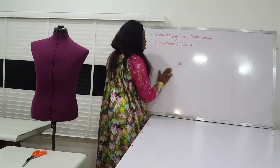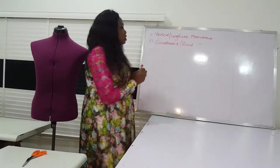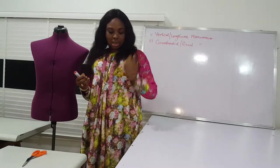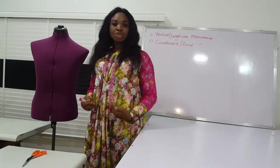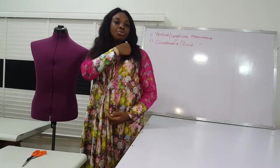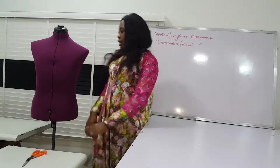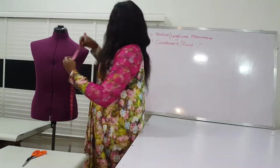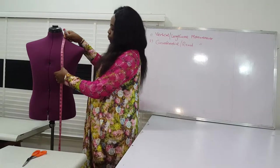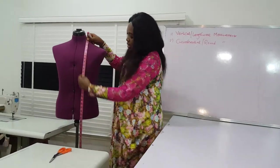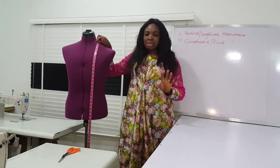For the vertical measurement, it's the measurement that we take from our shoulders downward in a standing position — from your shoulder down to your desired points. For example, from the shoulder down to the bust point, or from the shoulder down to the waist. That is the vertical measurement.